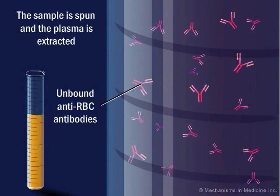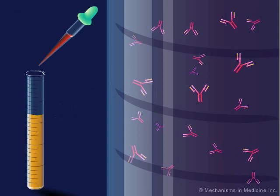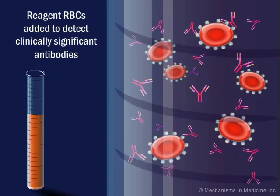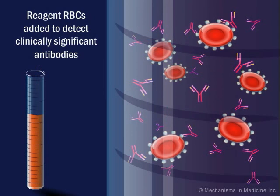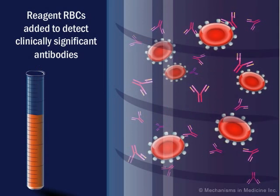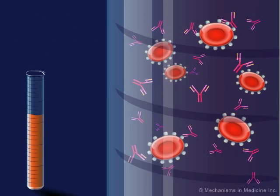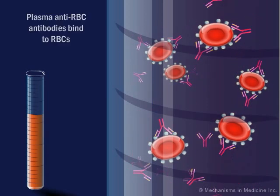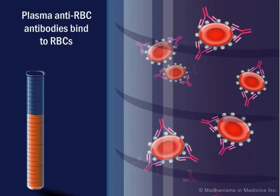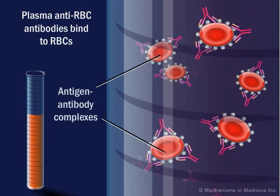Unbound human anti-red blood cell antibodies remain in the plasma. The plasma is then incubated with reagent red blood cells selected to detect specific antibodies that are considered clinically significant. The anti-red blood cell antibodies of the patient's plasma bind to reagent red blood cells to form antigen-antibody complexes.